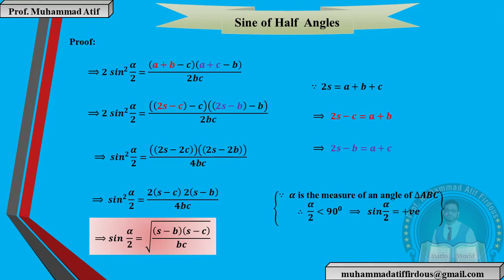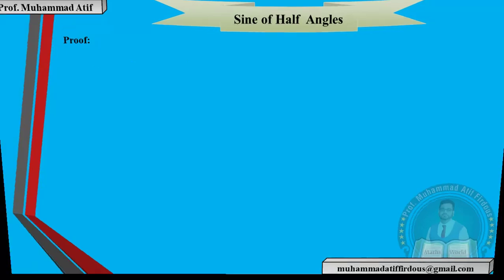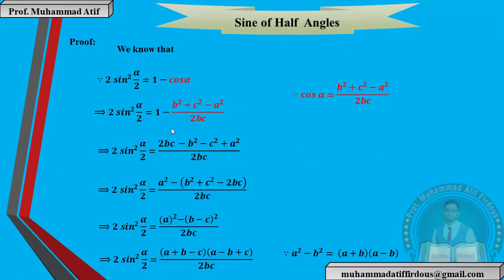Now let's go to the sine formula for β/2 and γ/2 — these can be easily proved by the same pattern. For the cosine half angle formula, the proof follows the same steps. Where we had 2sin²(α/2) = 1 − cos α, for cosine we use 2cos²(α/2) = 1 + cos α. The only difference is that the negative becomes positive — all other steps are the same. So 2cos²(α/2) follows the same pattern.